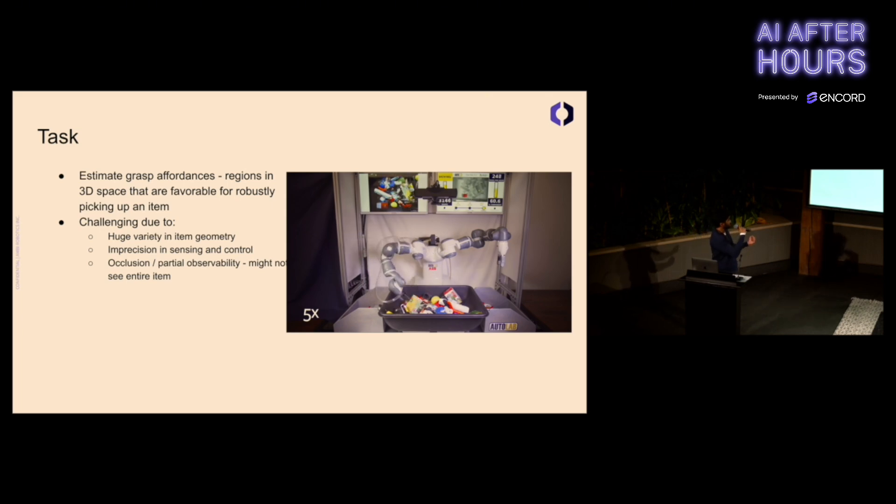This is challenging for a couple of reasons. First, there's a huge variety in item geometry, many different shapes and sizes of items. There's also imprecision in sensing and control. When you tell the robot to go somewhere, it doesn't always get to that exact point in space. There's also the problem of occlusion and partial observability. Oftentimes, you can't see the full object, especially if you're looking from above, so you have to reason about what the rest of it might look like.